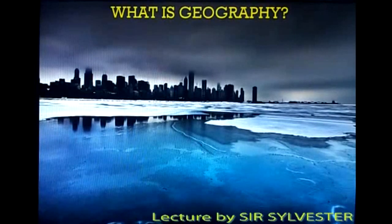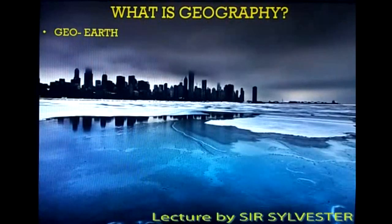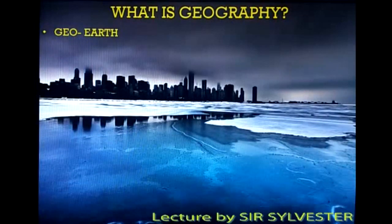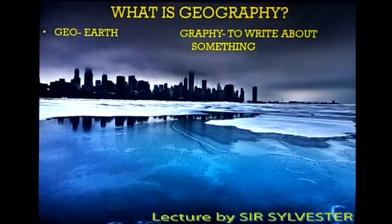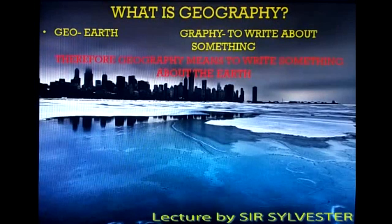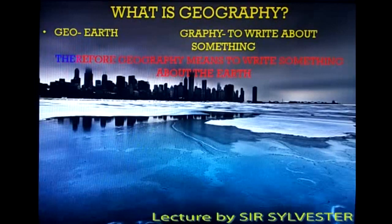What is Geography? Geography basically comes from two words: Geo meaning Earth, and Graphy means to write about something. So therefore, Geography means to write something about the Earth.